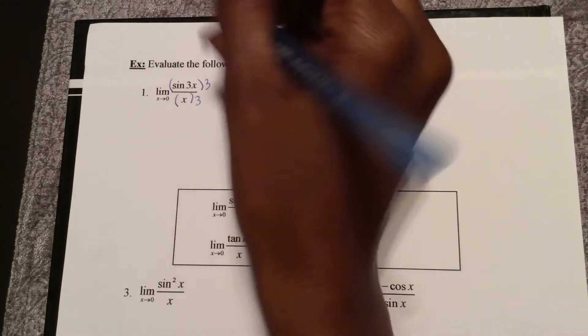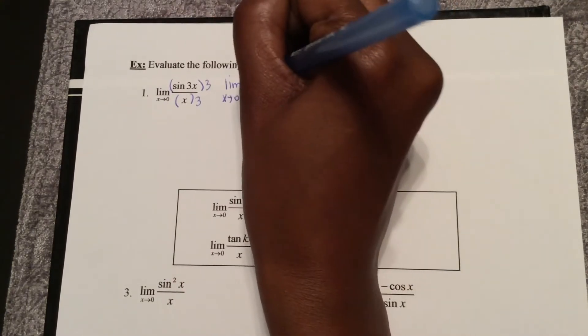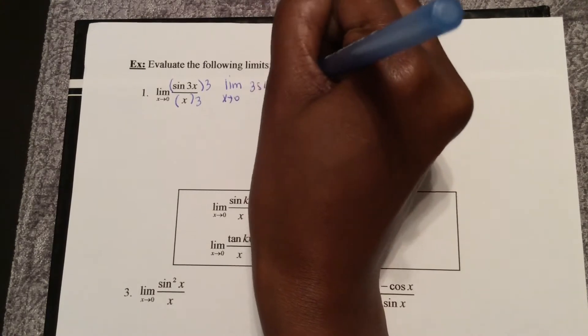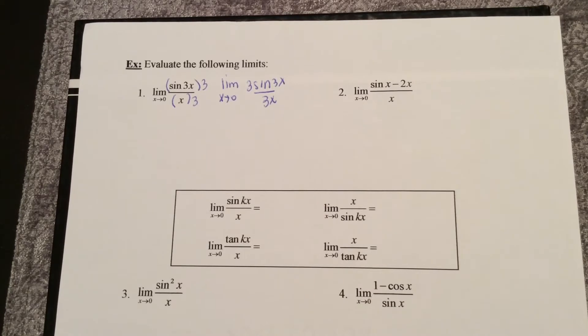So now I have the limit as x approaches 0 of 3 sine 3x over 3x. So this is starting to look a lot more like my special sine x over x limit, but it looks a little different.